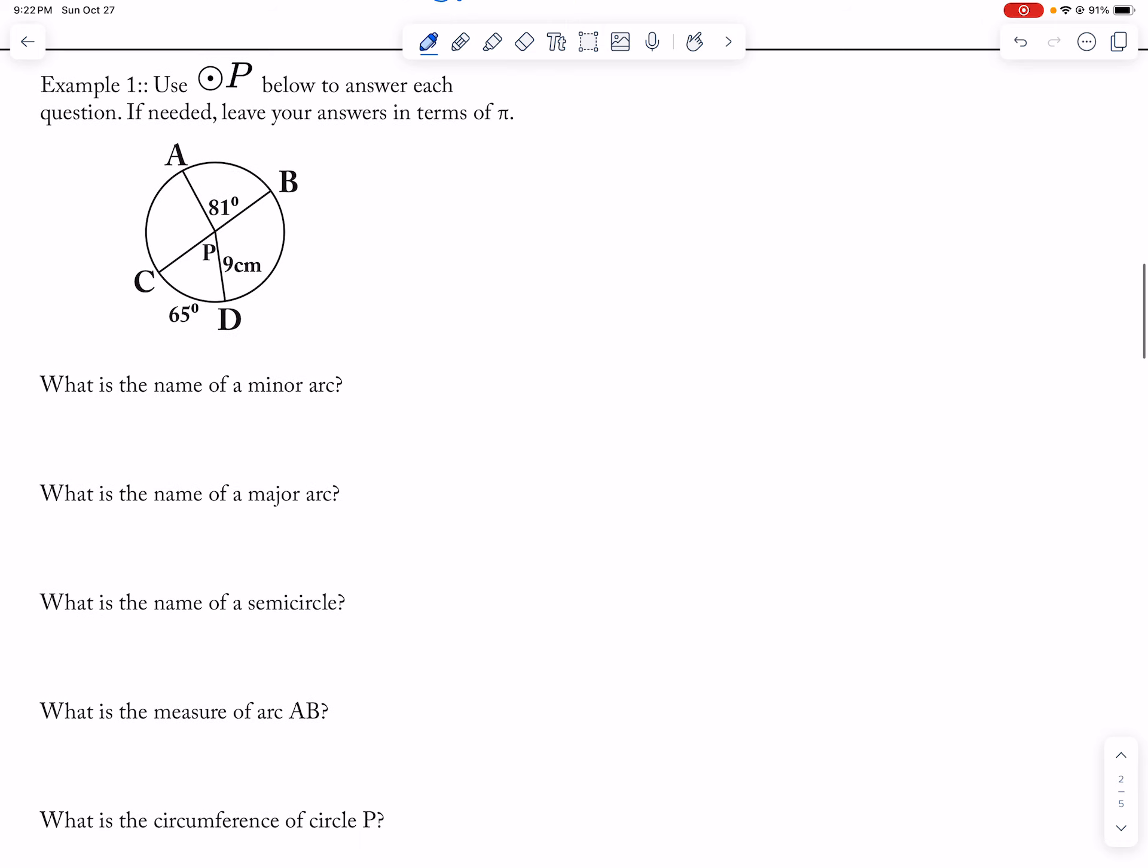And then minor arc is something that's smaller than that. And I only said to name one of them, but I mean, I guess you could have named more if you really wanted to. So, I labeled AB because that was easy.